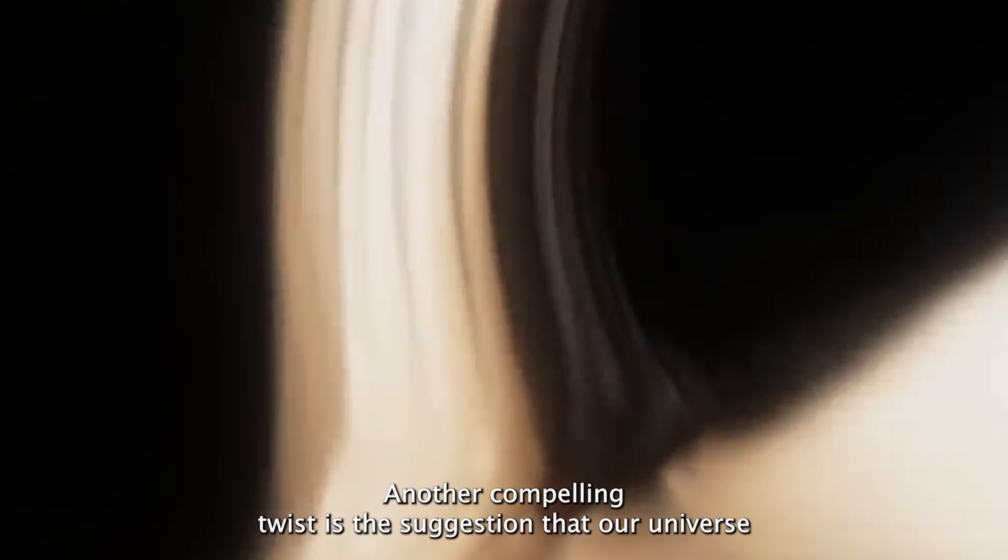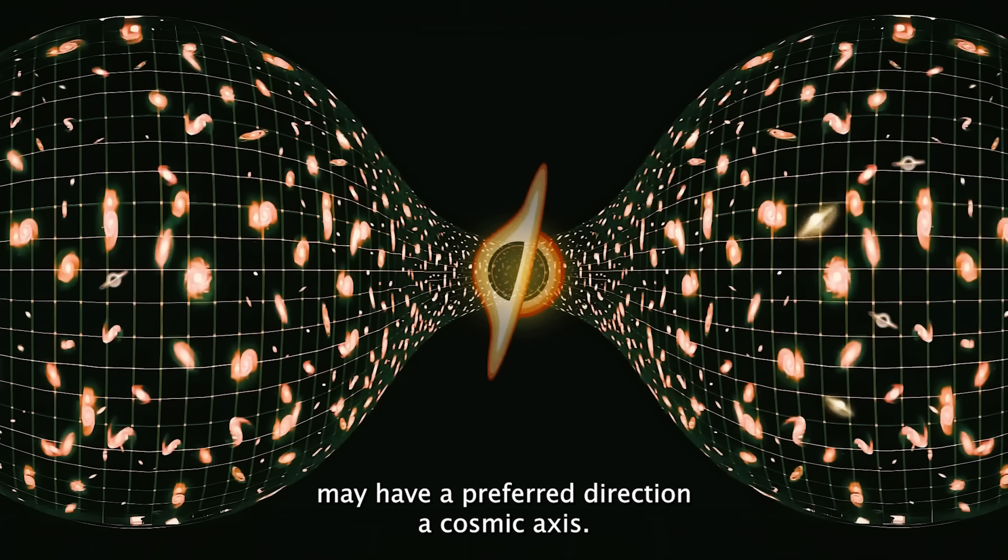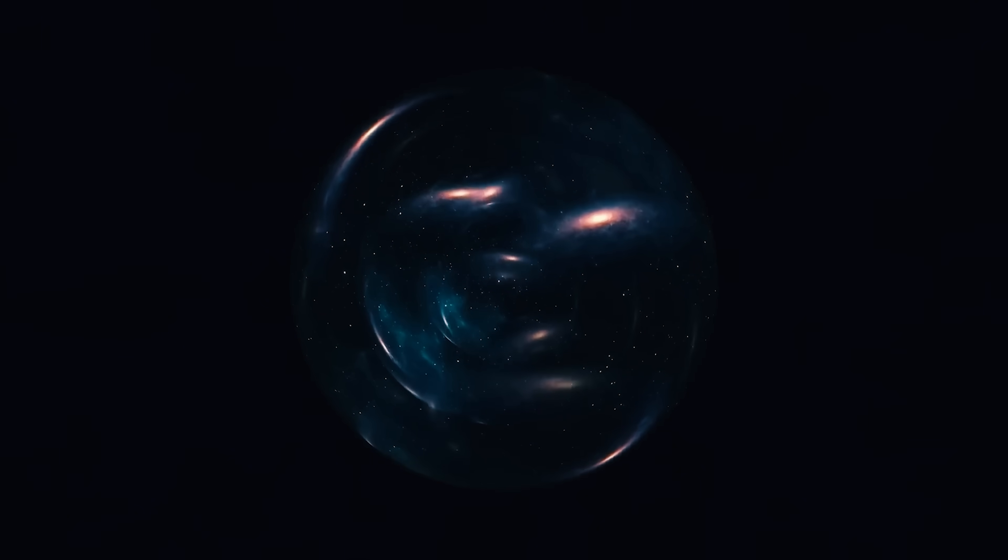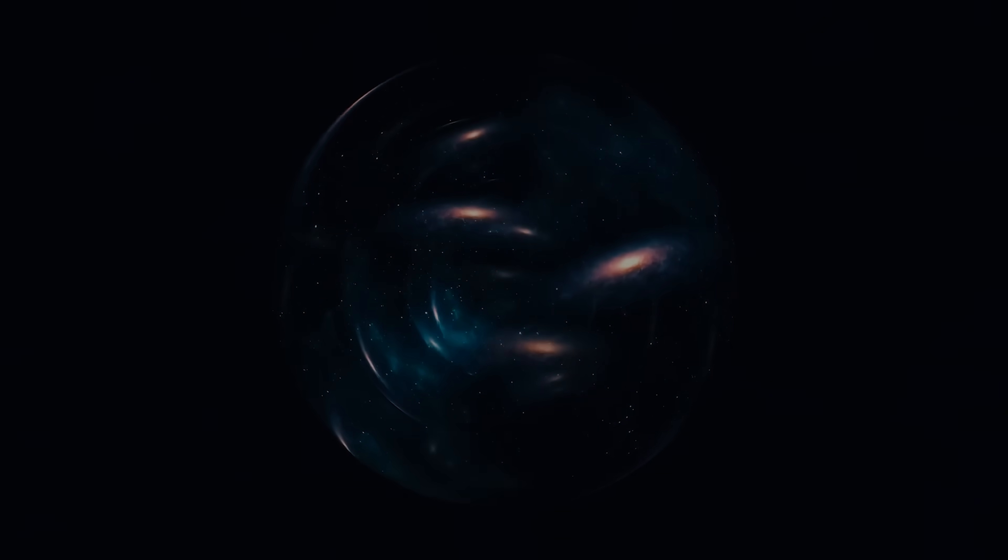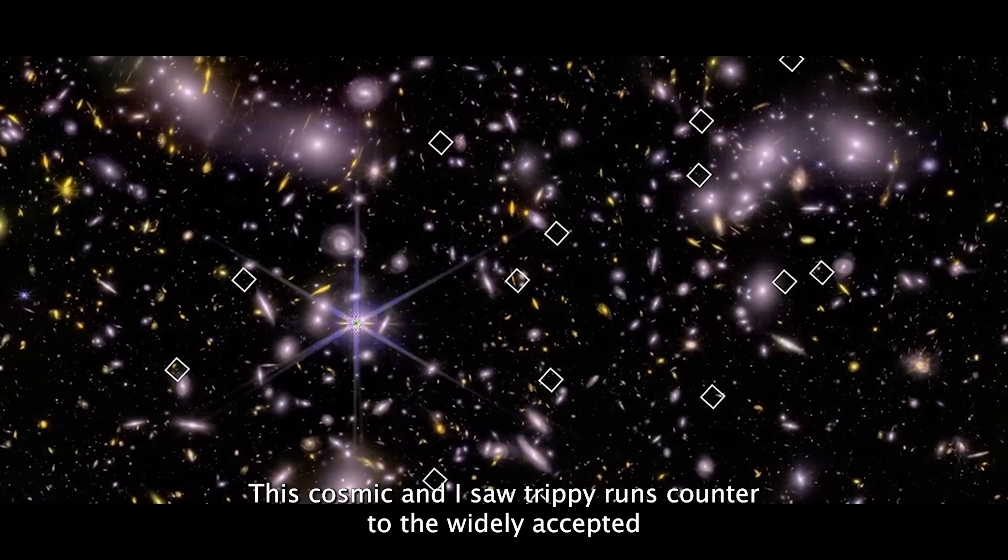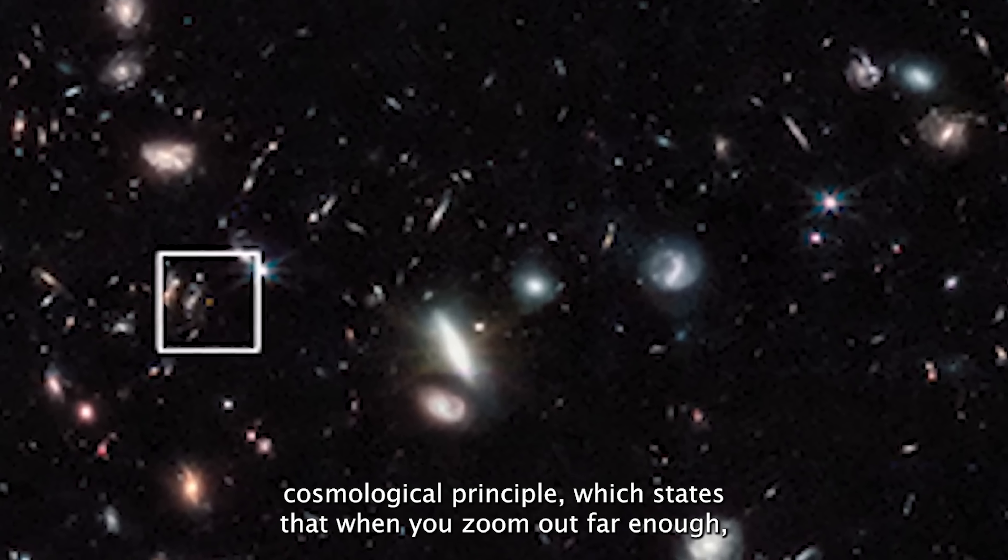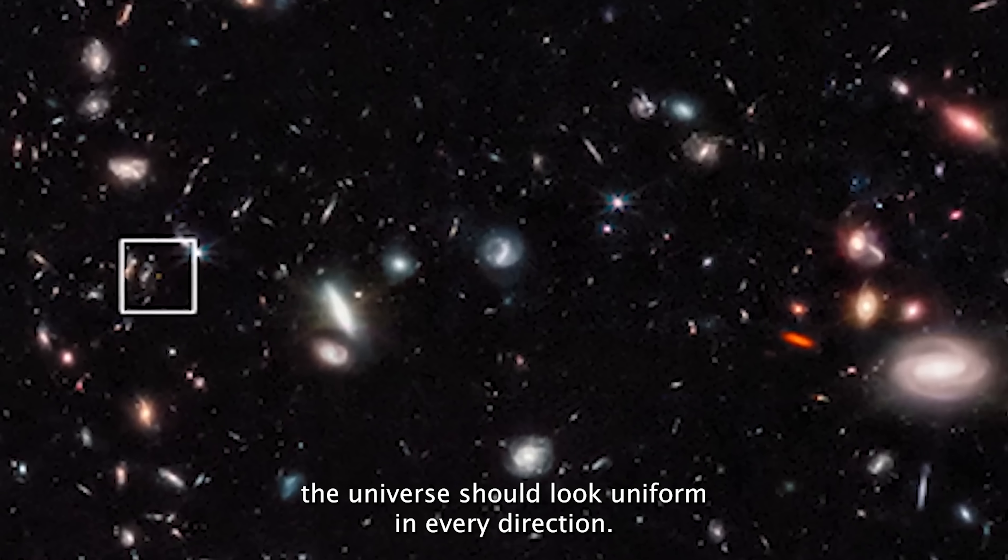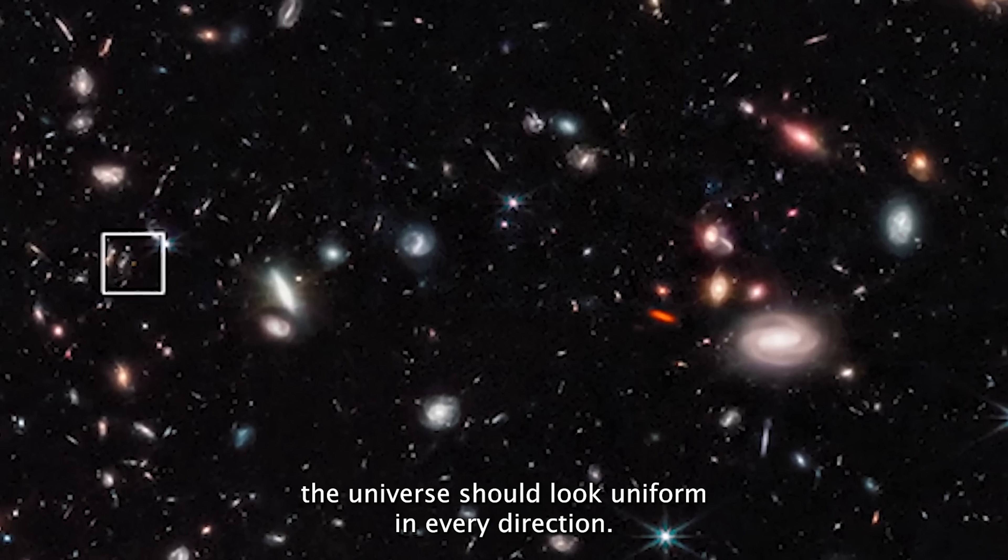Another compelling twist is the suggestion that our universe may have a preferred direction, a cosmic axis. Studies of galaxy distributions and their motions show patterns that aren't completely random. This cosmic anisotropy runs counter to the widely accepted cosmological principle, which states that when you zoom out far enough, the universe should look uniform in every direction.